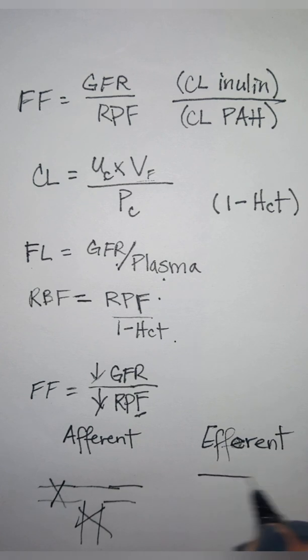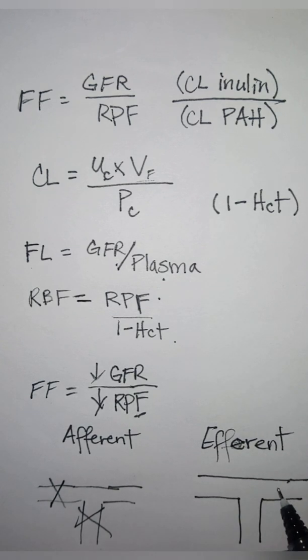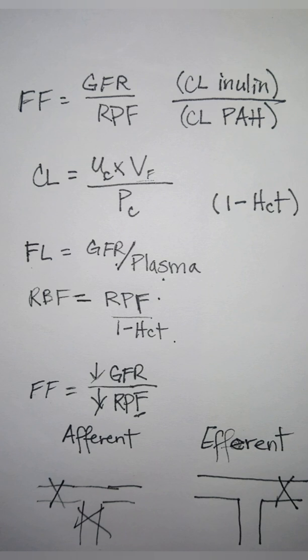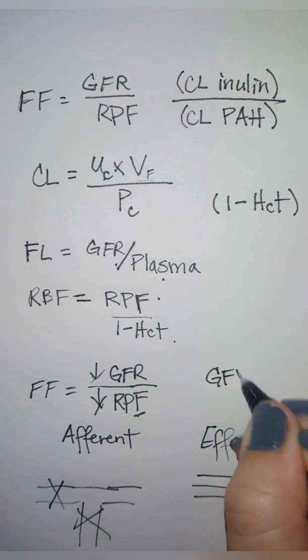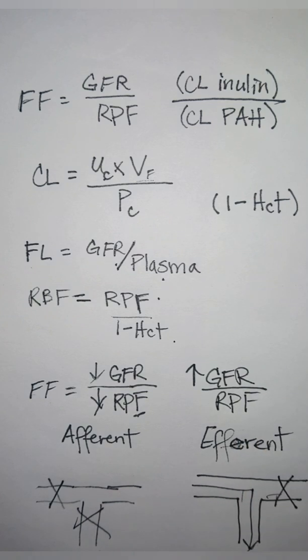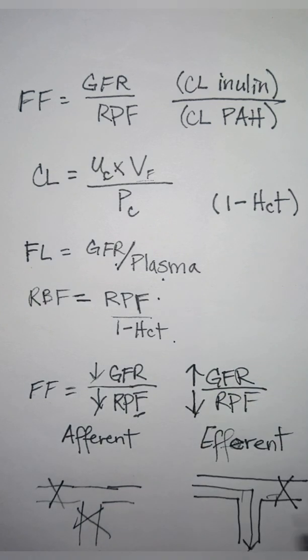So for efferent, same concept. This is afferent. This is efferent. This is everything filtered, GFR. So if I constrict the efferent over here, GFR will increase because it can't go out. So more of it will be filtered and our renal plasma flow will actually decrease because it's not flowing out comfortably.